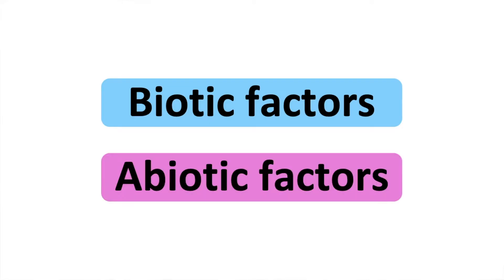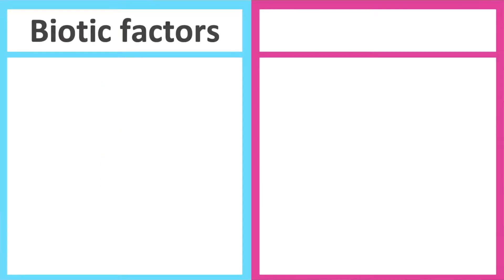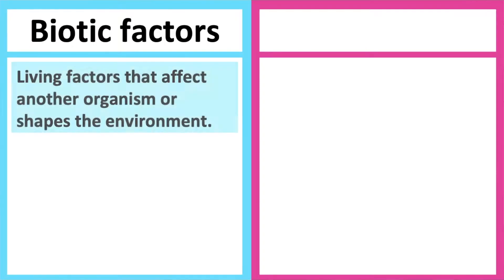Biotic factors, abiotic factors. Biotic factors are living factors that affect another organism or shape the environment. These are basically ways in which living organisms can affect one another, such as animals, plants, bacteria, fungi, etc.